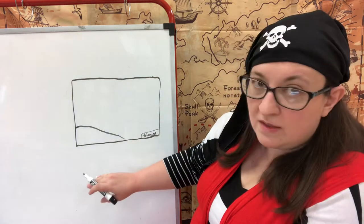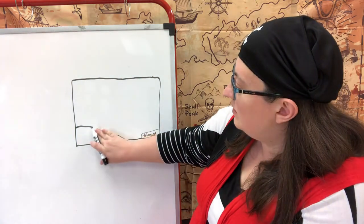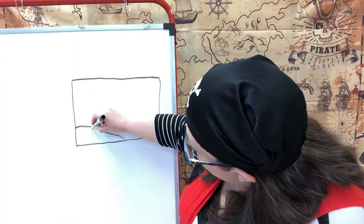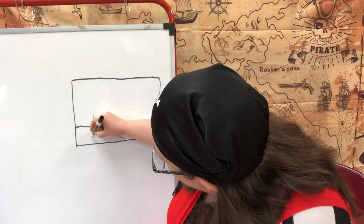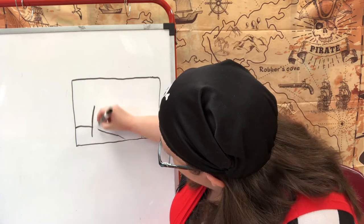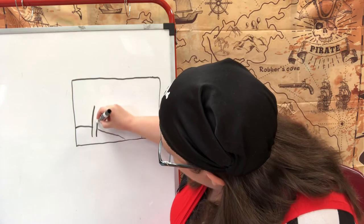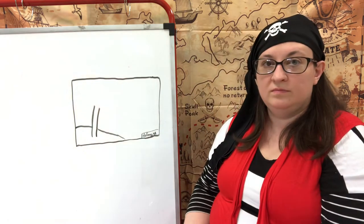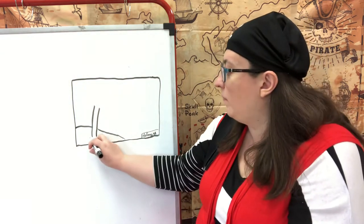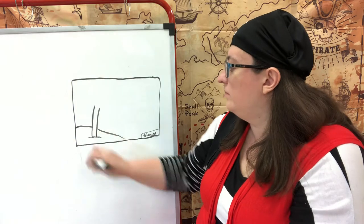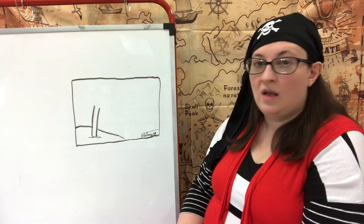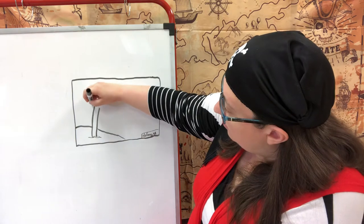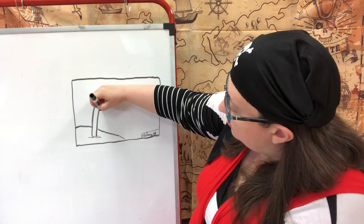Next I might put a palm tree on my island. Since you're using a pencil you can just erase a little section and do two lines up for the trunk. Maybe put a little mound of sand at the bottom. Maybe this is a coconut tree - we'll put some coconuts at the top: circle, circle, circle.